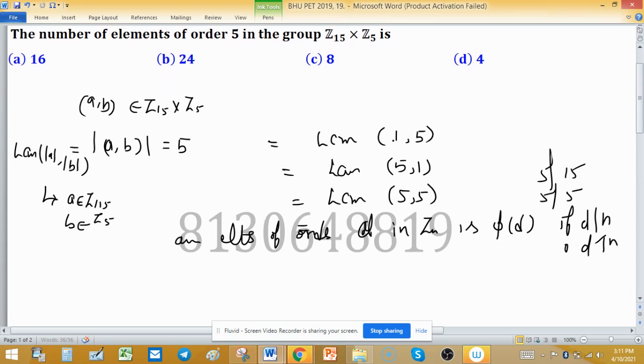In the first case, order of a is 1, which means only the identity element exists - one element. And order 5 means φ(5) = 4 elements. So 1 × 4 = 4 total elements from this case.